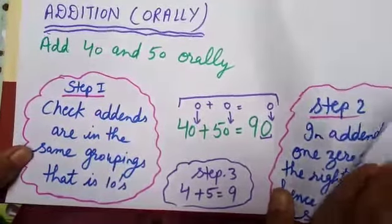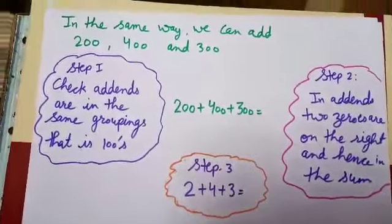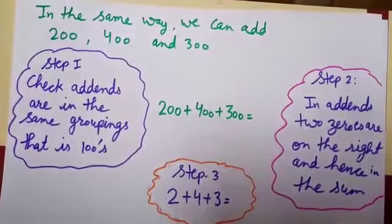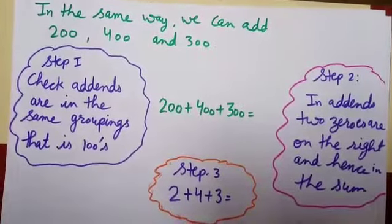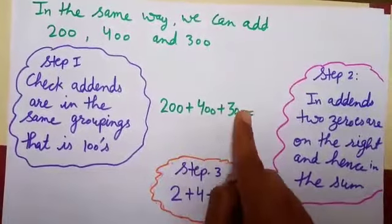Let us take another example. If I want to add 200, 400, and 300 orally, first step: I will check addends are in the same grouping, that is 100.